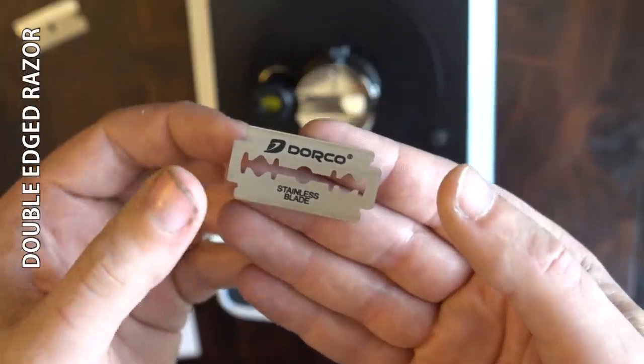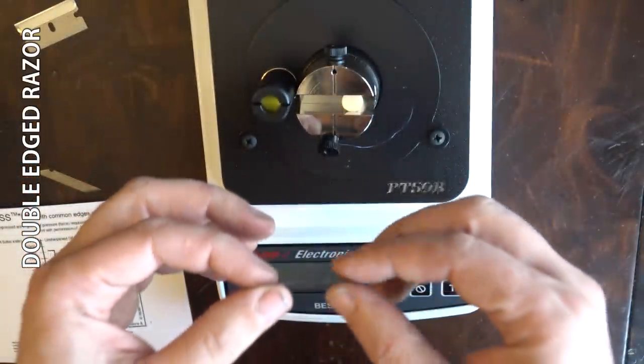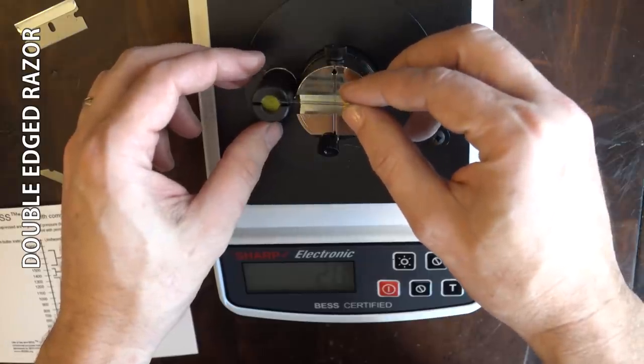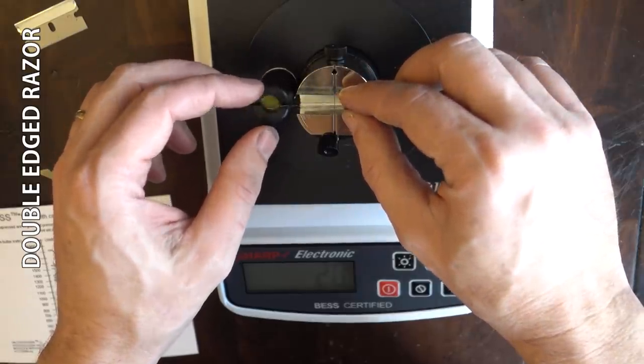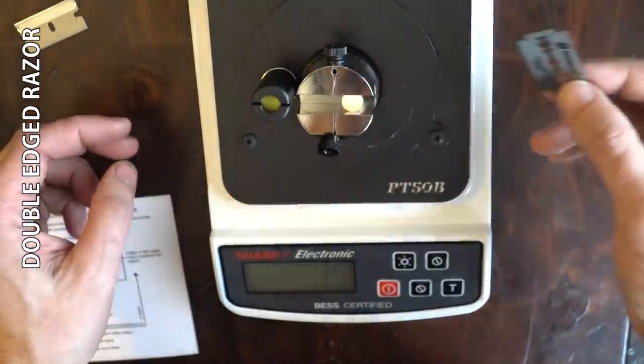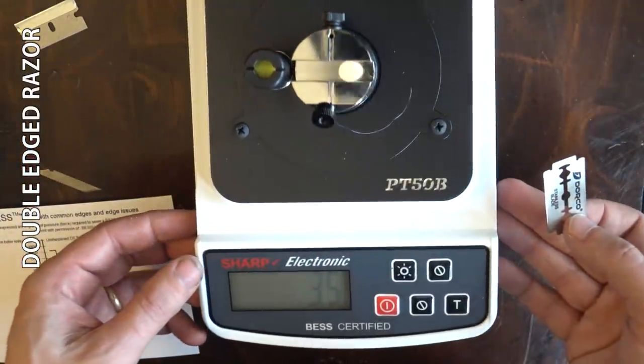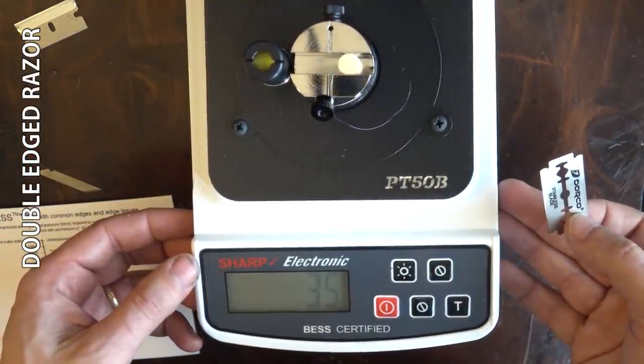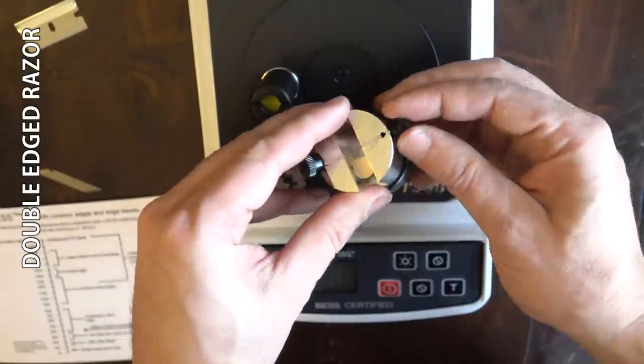145. So according to that graph, that's actually pretty sharp for that single-edged utility razor. Here's our double-edged razor. What? 35. I don't hardly believe that. That's so sharp. I'm going to check that again.